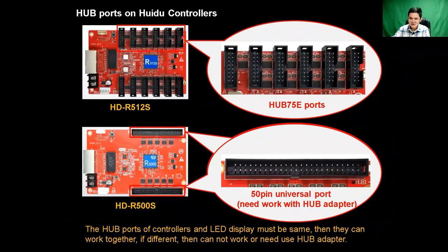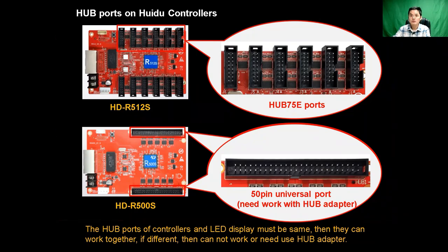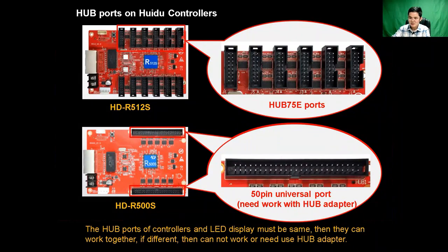Let's continue to check hub ports on Huidu receiving cards. You can see the photo. The receiving card R5 is a Huidu receiving card — it has 12 groups of HUB75E ports. And the next is our R500, also a Huidu receiving card — it has two groups of 15-pin ports. Since the R500 uses 15-pin ports, it needs to use a hub adapter.